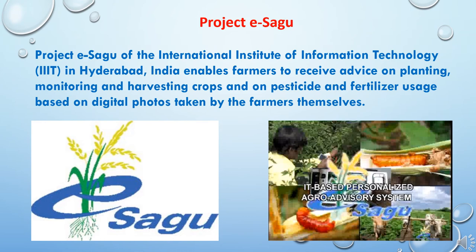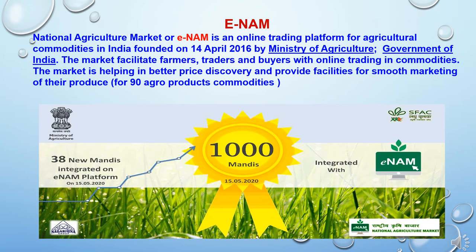Project eSAGU of the International Institute of Information Technology (IIIT) in Hyderabad, India, enables farmers to receive advice on planting, monitoring, and harvesting crops and on pesticide and fertilizer usage based on digital photos taken by the farmers themselves. The next tool is eNAM — the National Agriculture Market — an online trading platform for agricultural commodities in India, founded on 14th April 2016 by the Ministry of Agriculture. The market facilitates farmers, traders, and buyers with online trading in commodities, helping in better price discovery and providing facilities for smooth marketing of their produce, where more than 90 agro-product commodities are registered.